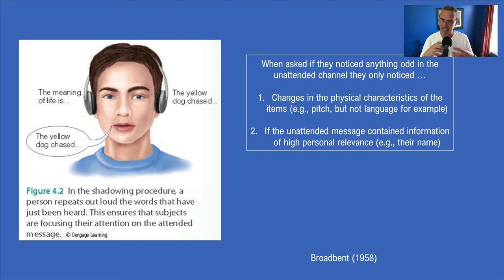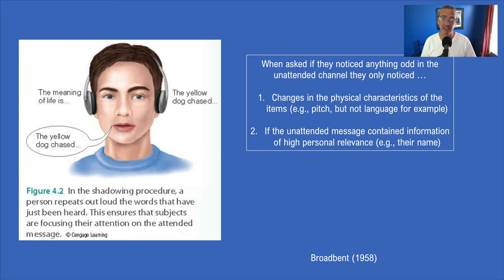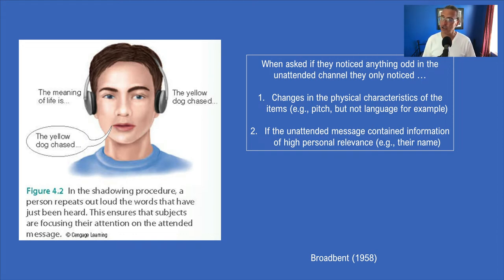They would notice if the actual physical characteristic of the stimulus changed — for example, a voice moving from a lower frequency range to a higher one, or if the words were suddenly sped up. If you mess with physical characteristics like frequency or speed, they notice. But for more subtle changes like language shifts, they don't notice at all, and mostly they'd say they barely heard that message while focused on the attended one.